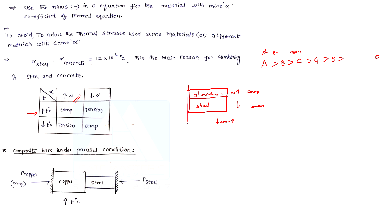If we restrict the temperature expansion, we will be able to get a compressive force. This is a very simple example. The temperature is very high, and if we restrict the expansion, a compressive force is produced.